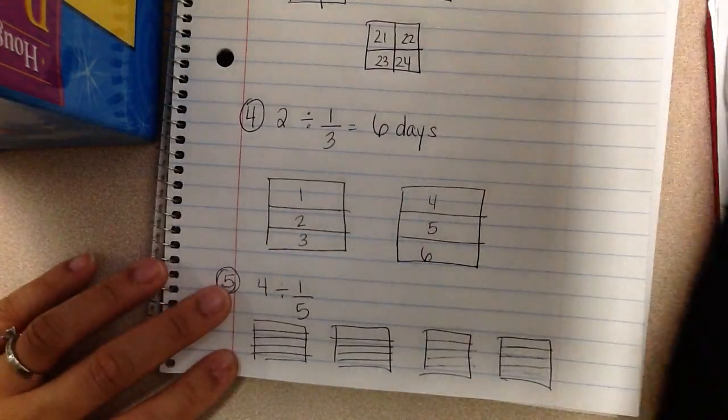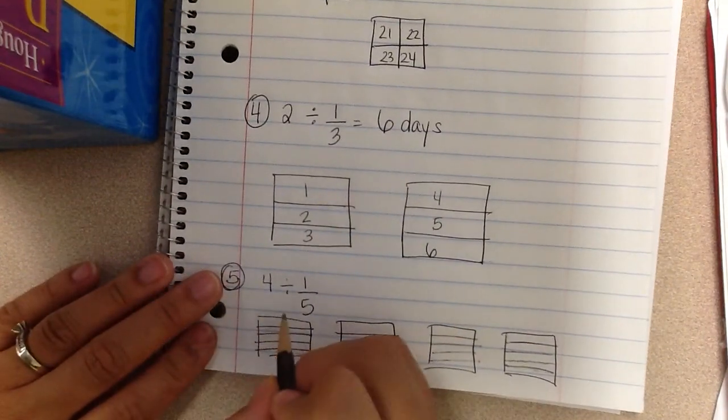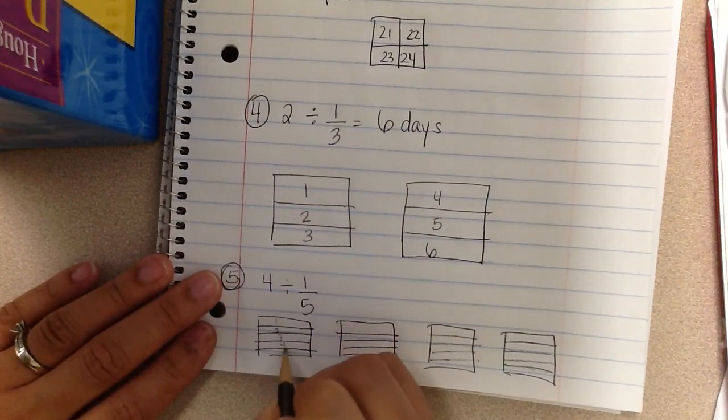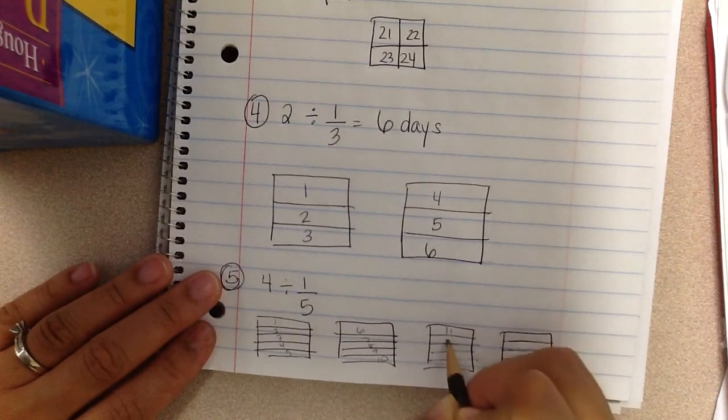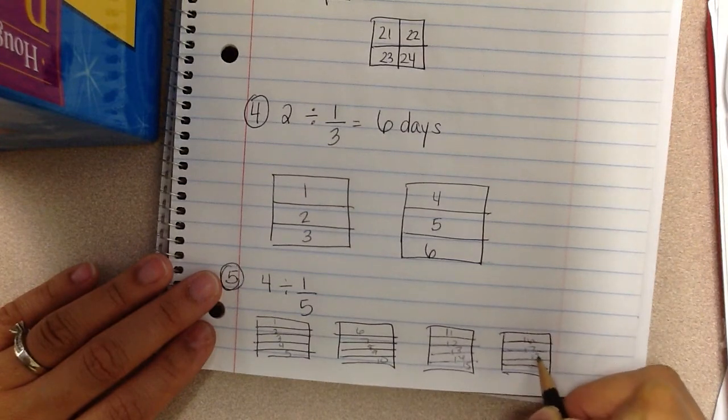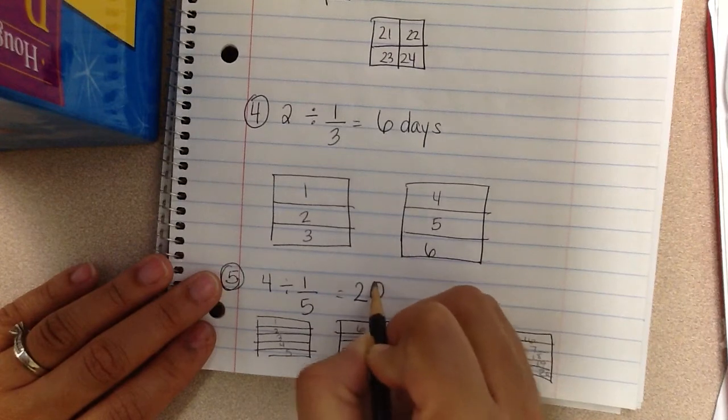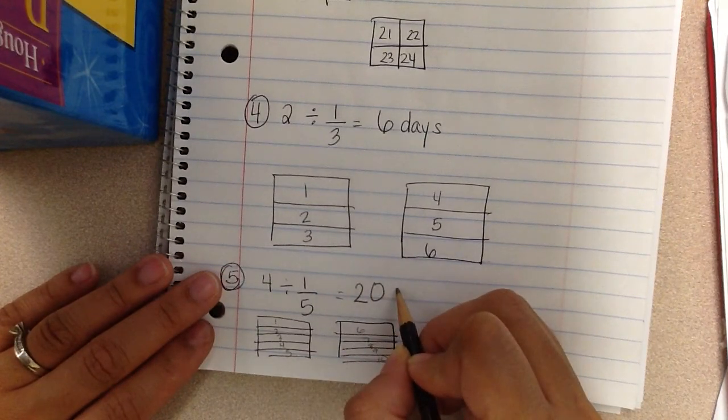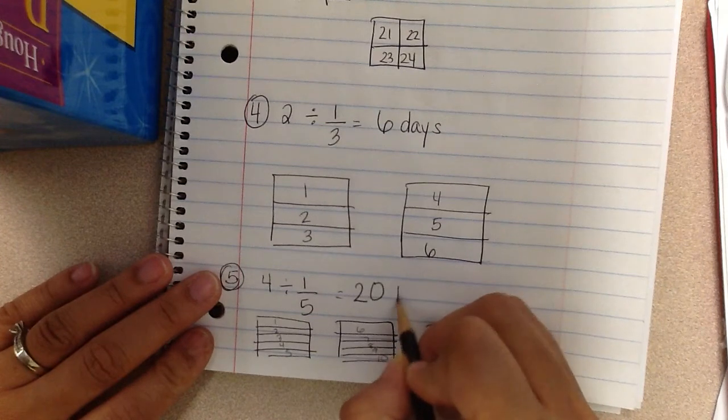My pen's running out on me. All right. Then I'm going to count how many fifths I have: one, two, three, four, five, six, seven, eight, nine, ten, eleven, twelve, thirteen, fourteen, fifteen, sixteen, seventeen, eighteen, nineteen, twenty. So my answer is twenty, she can make twenty batches of lemonade.